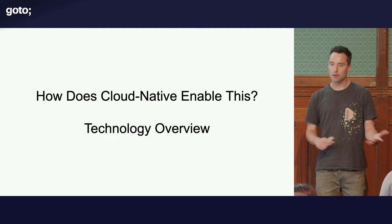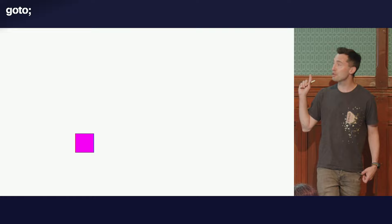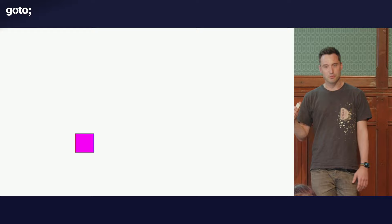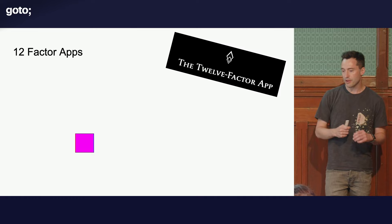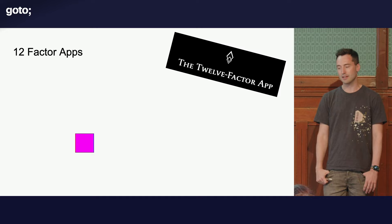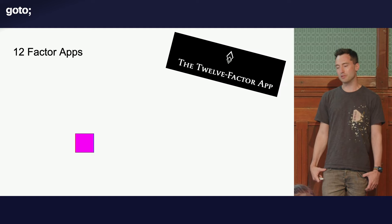So how does Cloud Native enable this? A quick tech overview. In the beginning there was a process — you wrote some code, it ended up running on Linux. 12Factor is a bit dated now in some ways; it's kind of like how Heroku thinks you should write apps. But it's not wrong — the principles about keeping config separate and isolating dependencies are things we're going to rely on.